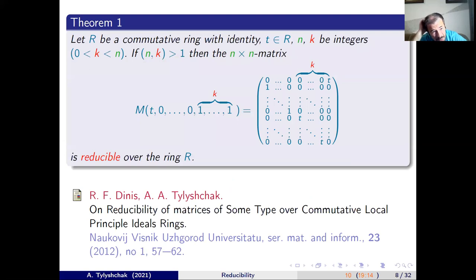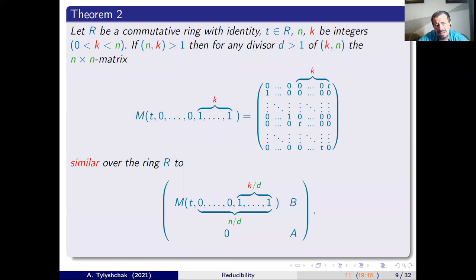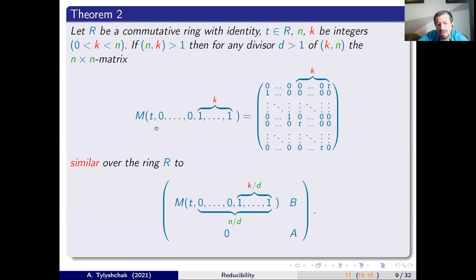More generally, we also found that a square matrix M of any size N over a commutative ring with identity, for any element T from ring R, is reducible if the size N and the number of elements K are not co-prime. This result was obtained with Ruslana Denise, now named Zimbolenets. Moreover, we showed that in the reducible form, in the upper-left corner, we obtain a matrix of the considered form but of smaller size and with another number of elements T on the non-zero positions.